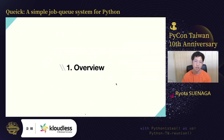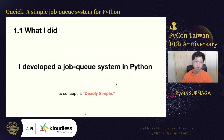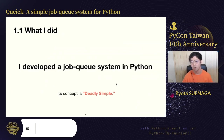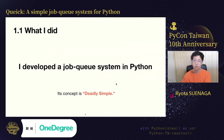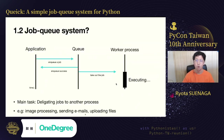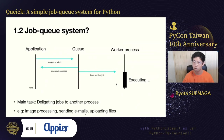Let me explain the overview of Qwik. I developed a job queue system in Python, as you know from my presentation title, and its concept is really simple. So what is a job queue system? Probably most of the audience here knows what it is, but please let me explain.